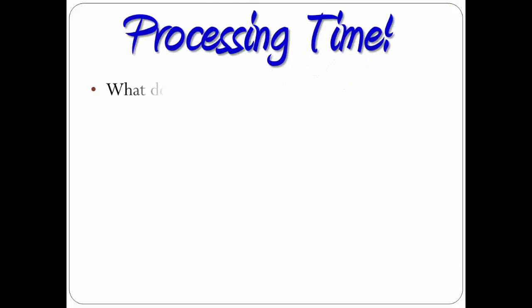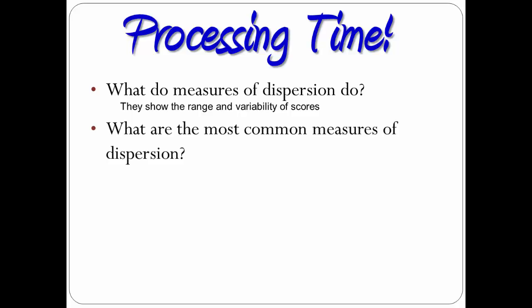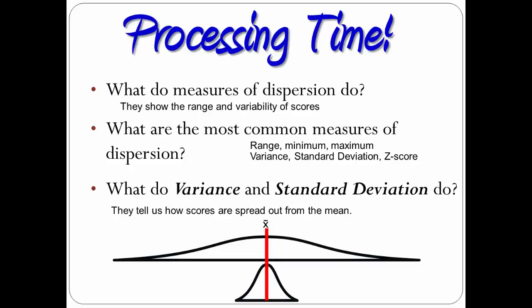Processing time. What do measures of dispersion do? They display the range and variability of scores. What are the most common measures of dispersion? The easy ones are range, minimum, and maximum — but there's also variance, standard deviation, and z-score. What do variance and standard deviation do? They tell us how scores are spread out from the mean. The higher the number, the more spread out the distribution is; the lower the number, the more compressed the scores are.